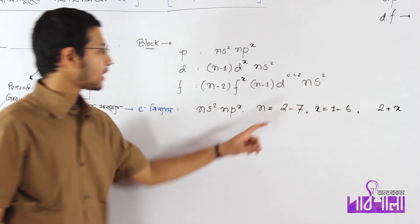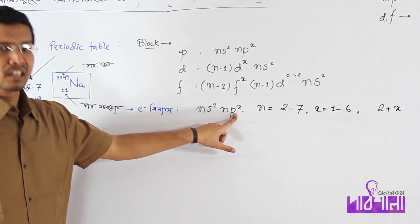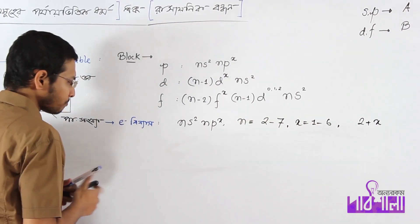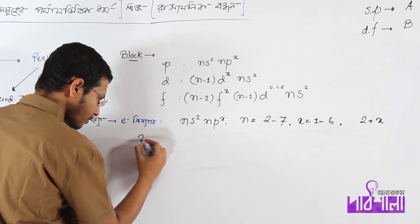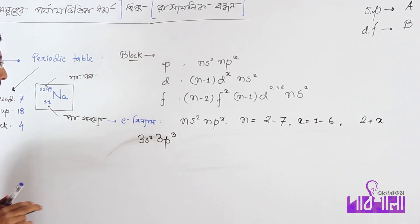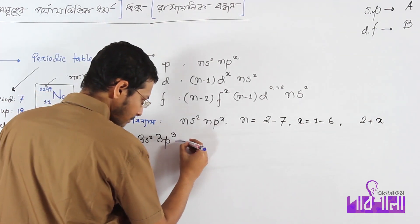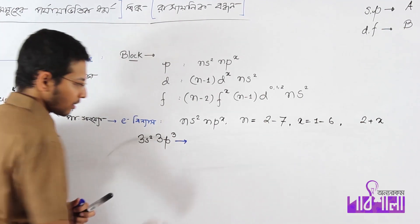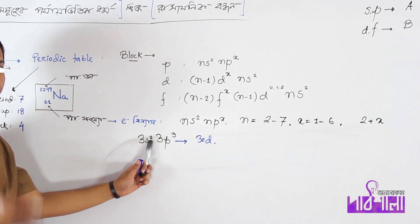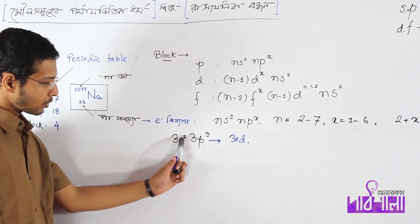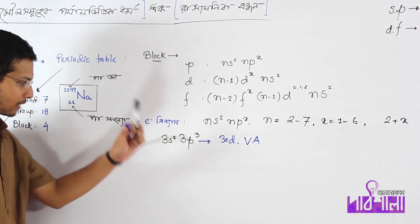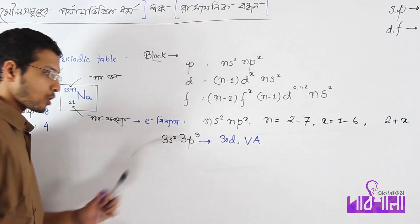The group number is 2 plus x. If p orbital is filled, then it is subgroup A. For example, if we have the configuration 3s², 3p³, the x value is 3. So 2 plus 3 equals 5, giving us group 5A.